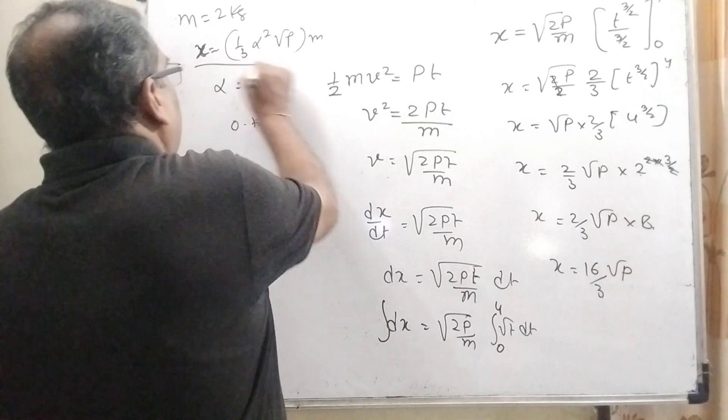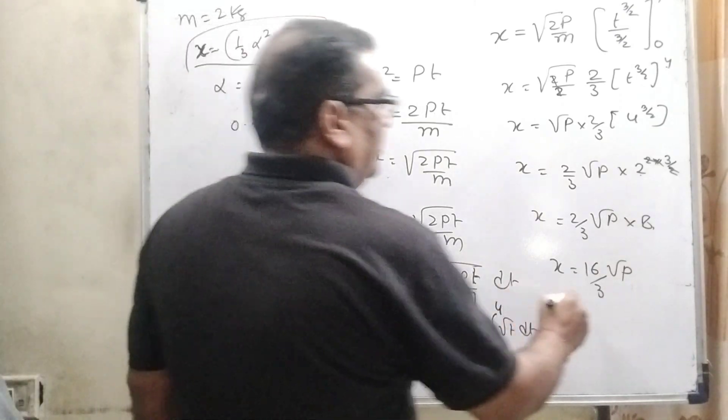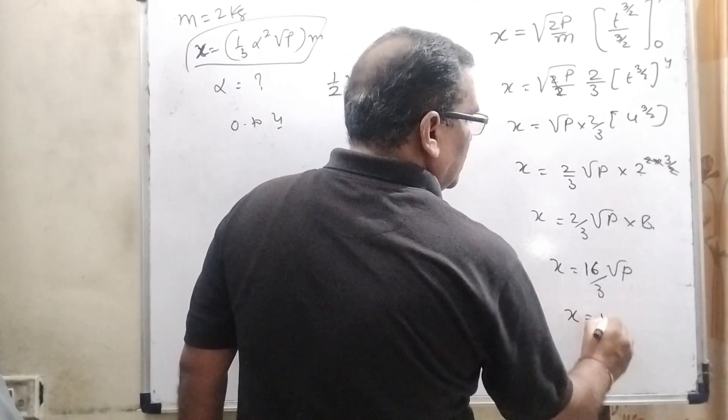Convert into this form. Here √P is same, 3 is same, and it is the square of 4. So 4².